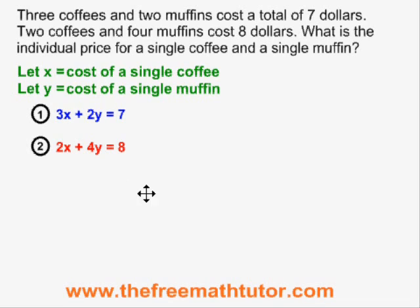My first step is to isolate the x in the second equation, the red one. By moving the 4y to the opposite side of the equals and then dividing the whole equation by 2, I end up with x equals 4 minus 2y. Therefore, the x in the other equation, the blue one, must also equal 4 minus 2y, and I can do my substitution.